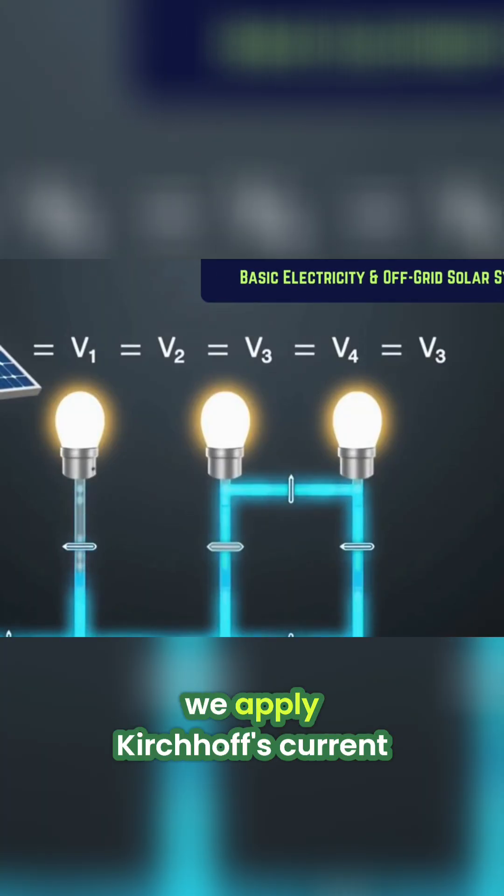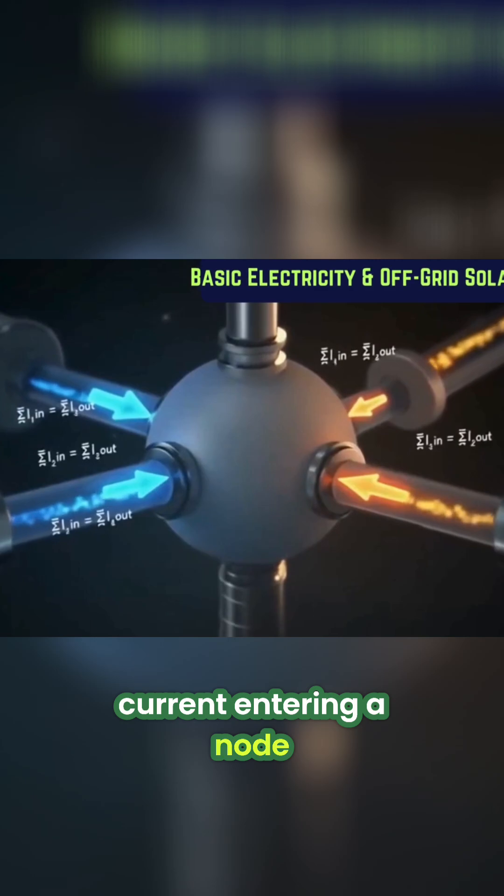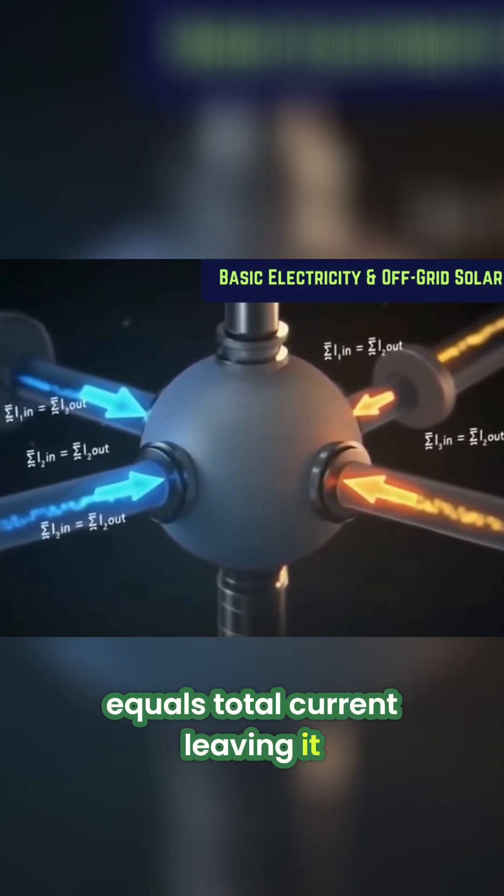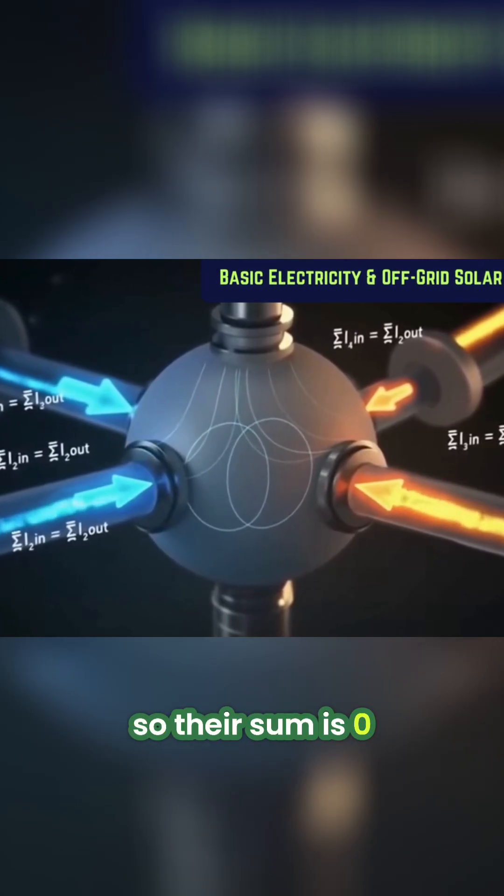Now, we apply Kirchhoff's current law. KCL states that total current entering a node equals total current leaving it. Current coming into a node is positive, and leaving is negative, so their sum is zero.